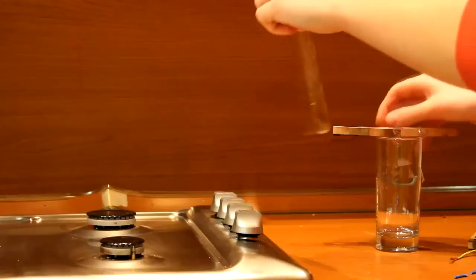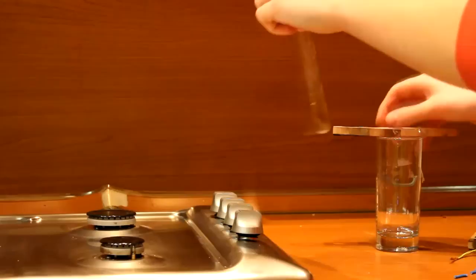A burgonya keményítő vizes oldatával jódos oldatot cseppeket tettünk, így a sötét kék, már-már fekete színű lett.